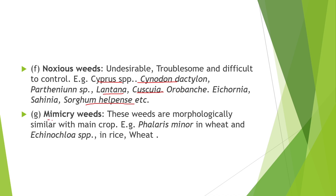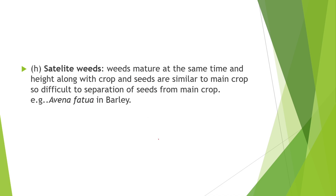Next is mimicry weeds — weeds that mimic the main crop and are morphologically similar to the crop. For example, Phalaris minor in wheat, and Echinochloa species in rice. And last is satellite weeds — these weeds mature at the same time and height as the crop, and their seeds are similar to the main crop, making them difficult to separate. Example is Avena fatua in barley.